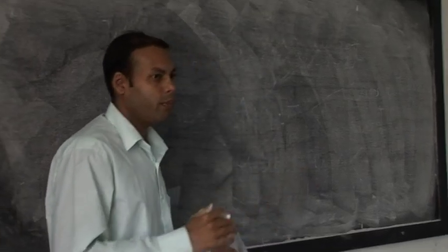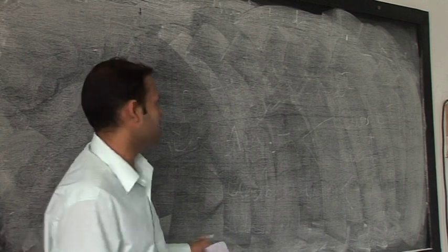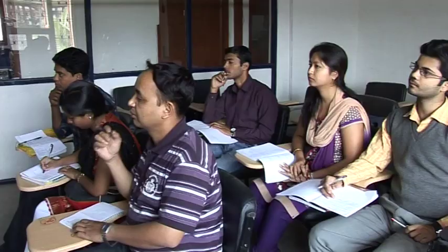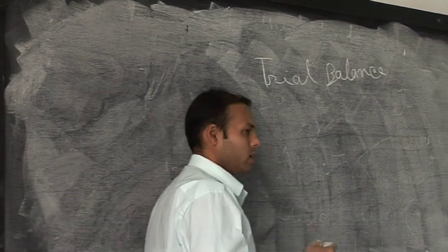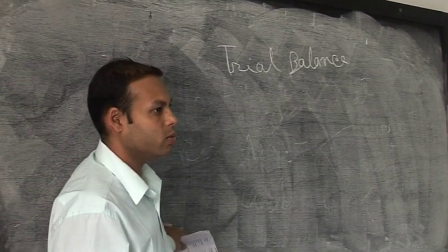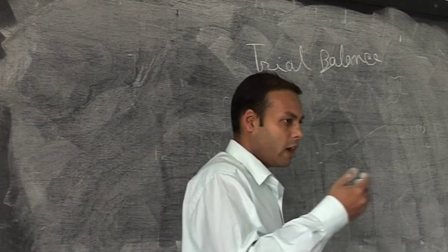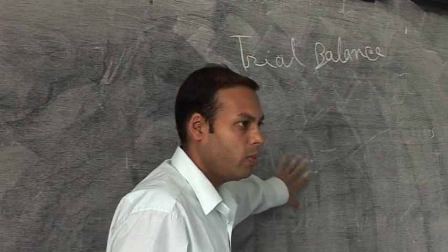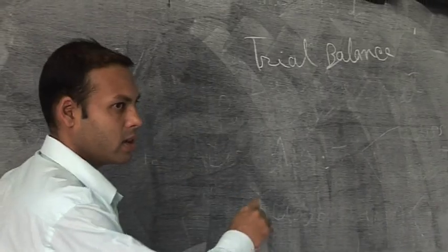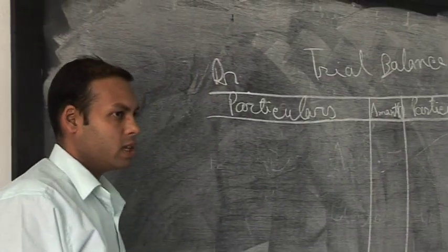To prepare final accounts, first we prepare a trial balance. Trial balance is a statement which contains the ledger balances. In accounting, the first step is preparing the journal — we record transactions in the primary book known as the journal. Then these are transferred to the ledger. After the ledgers are balanced, a trial balance is prepared with all the final balances of ledger accounts. All debit-side ledger balances are recorded on the debit side of the trial balance.